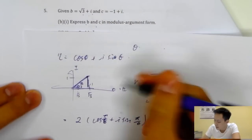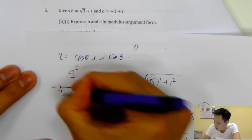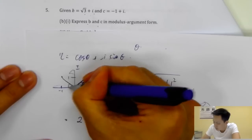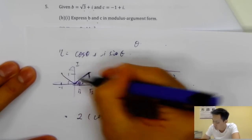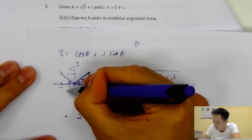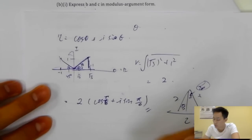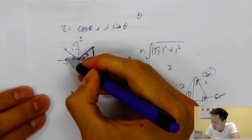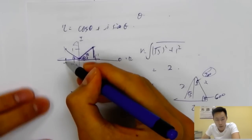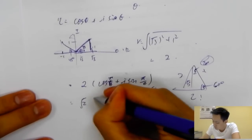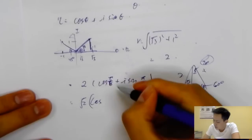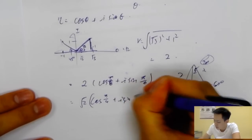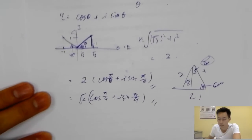For C: the real part is minus one and the imaginary part is one, so both sides are one — that's a 45-degree angle, which is pi over four. The modulus is the square root of 1^2 plus 1^2, which is root two. So C equals root two times (cos(pi/4) plus i sin(pi/4)). Easy.